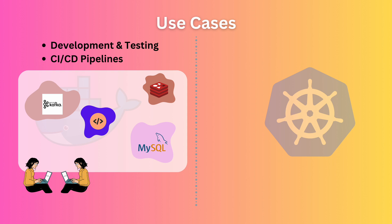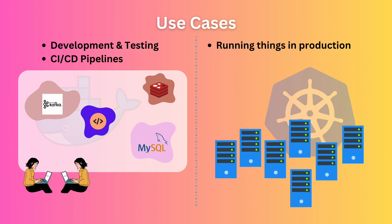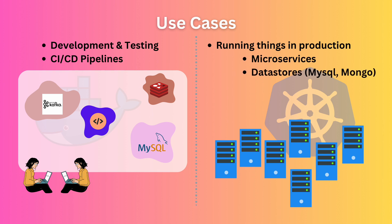Kubernetes comes into play when you deploy an application to production or other environments. It runs and manages the containers across a fleet of machines. It takes care of things like scheduling, resource management, scaling, automation, access control, and other things that you only need in production environments. So it is super useful when you want to deploy multiple microservices with high availability or data stores with strong durability guarantees. It can also be used to run big data workloads such as Apache Spark, or even run something smaller like cron jobs. Basically, if you want to run processes on multiple computers, Kubernetes is more suitable.